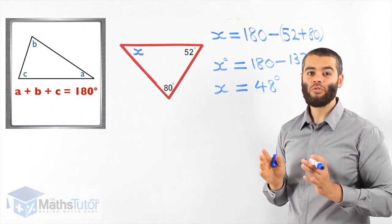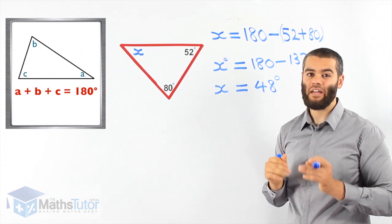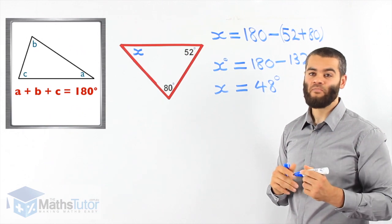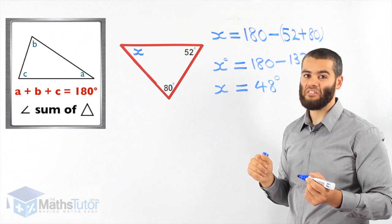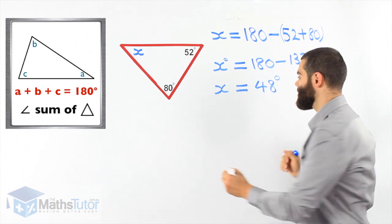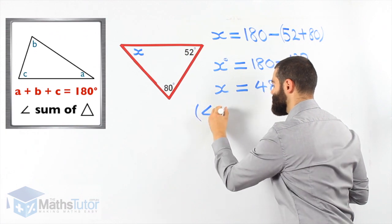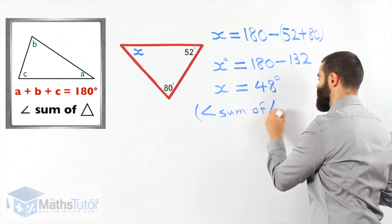Now we always have to write a reason. We have to justify our answer. Whenever we're finding missing angles, we have to give reasons. Here we use the angle sum of triangle reason. How is that written? Like this.